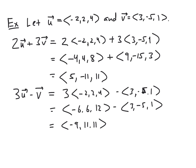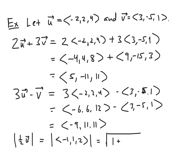We can also multiply by a non-integral scalar, like a fraction. Let's find the magnitude of one-half times vector u. One-half times u multiplies each component by one-half, giving negative 1, 1, 2. The magnitude is the square root of 1 plus 1 plus 4, which is the square root of 6. So the magnitude of one-half u is the square root of 6.